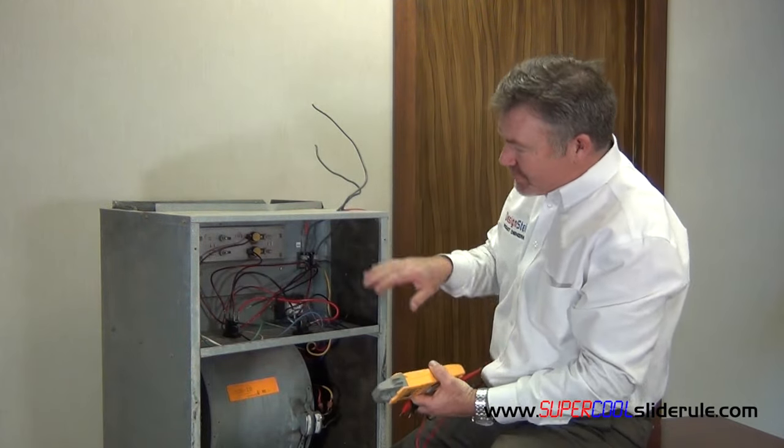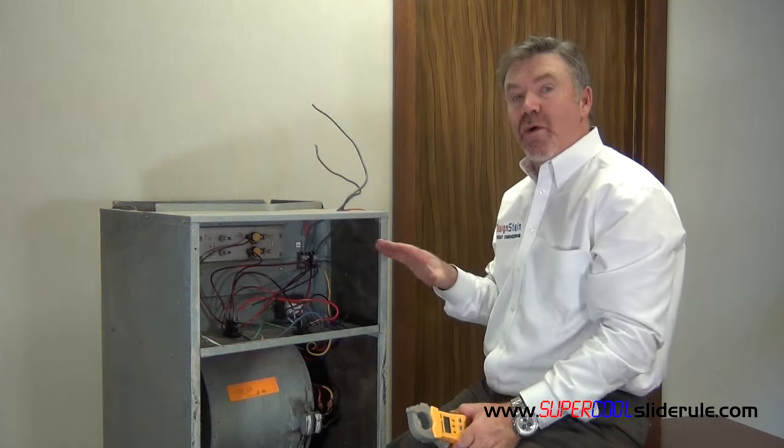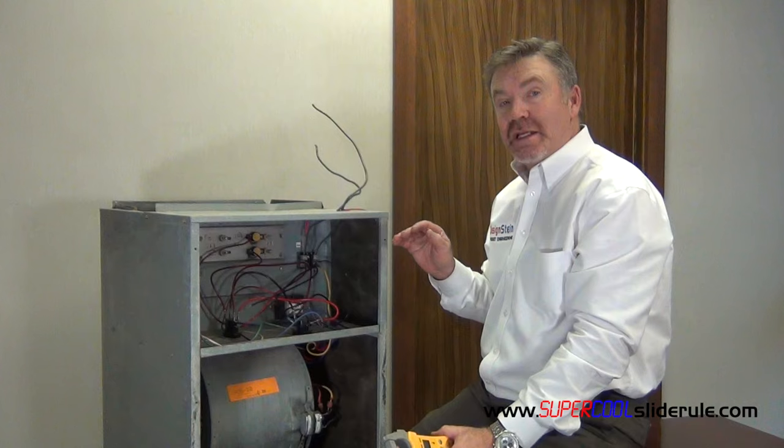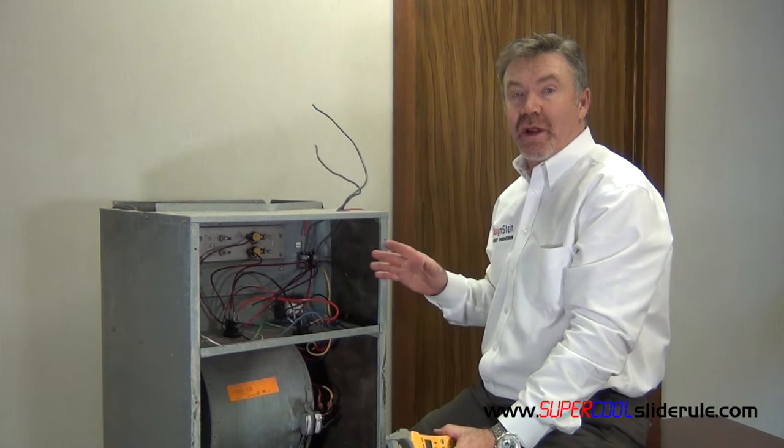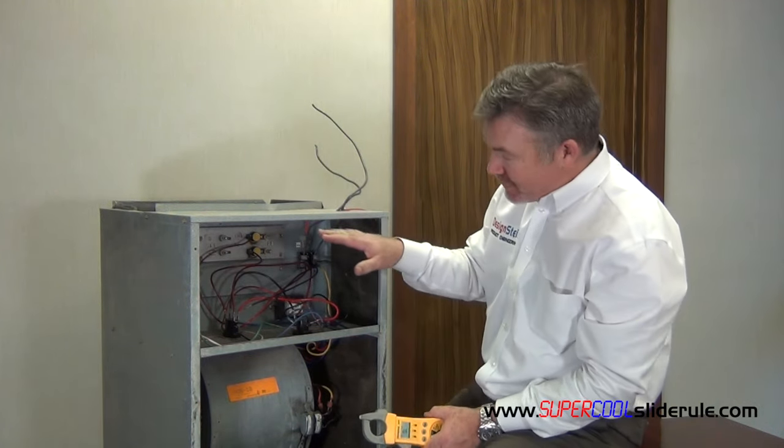Now, in this example, we have 10.7 ohms, but let's pretend we had, let's pretend it was OL, over limit, out of range. This means that it is open.